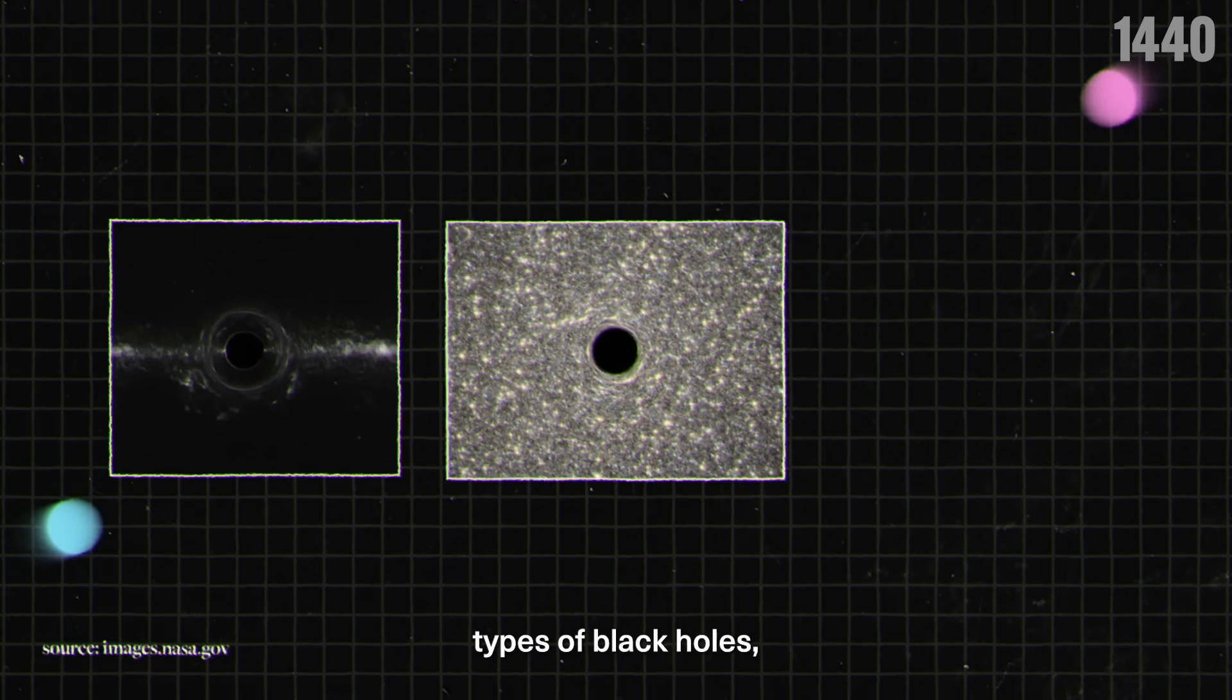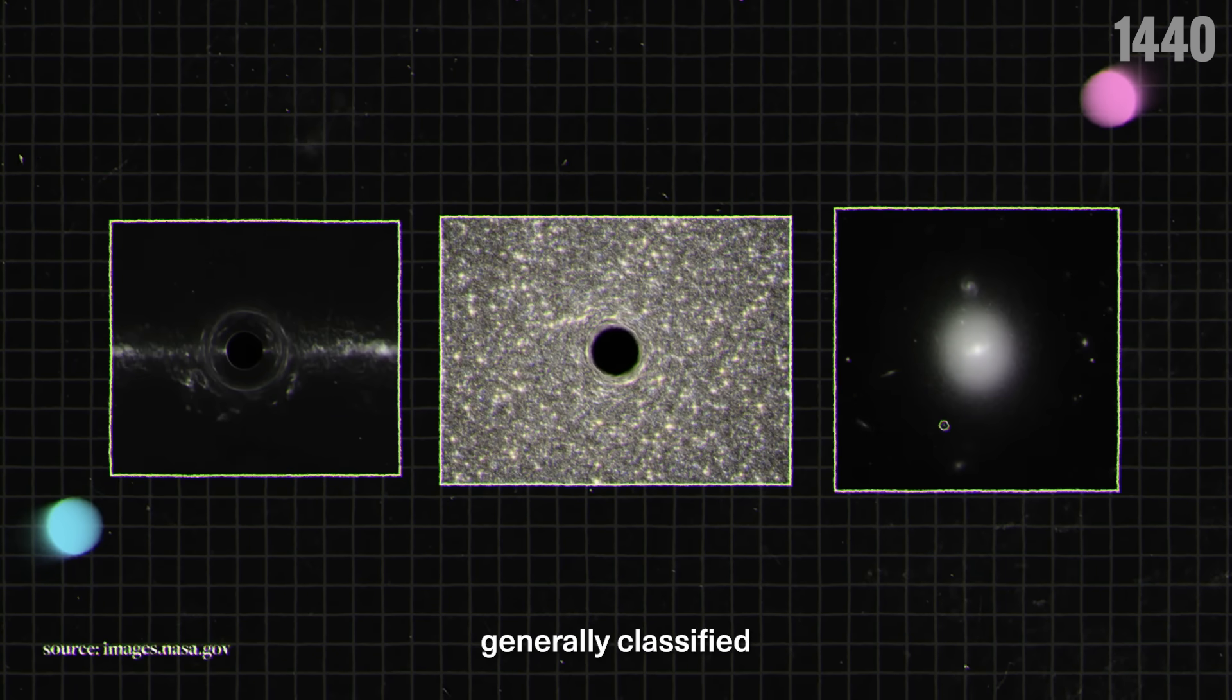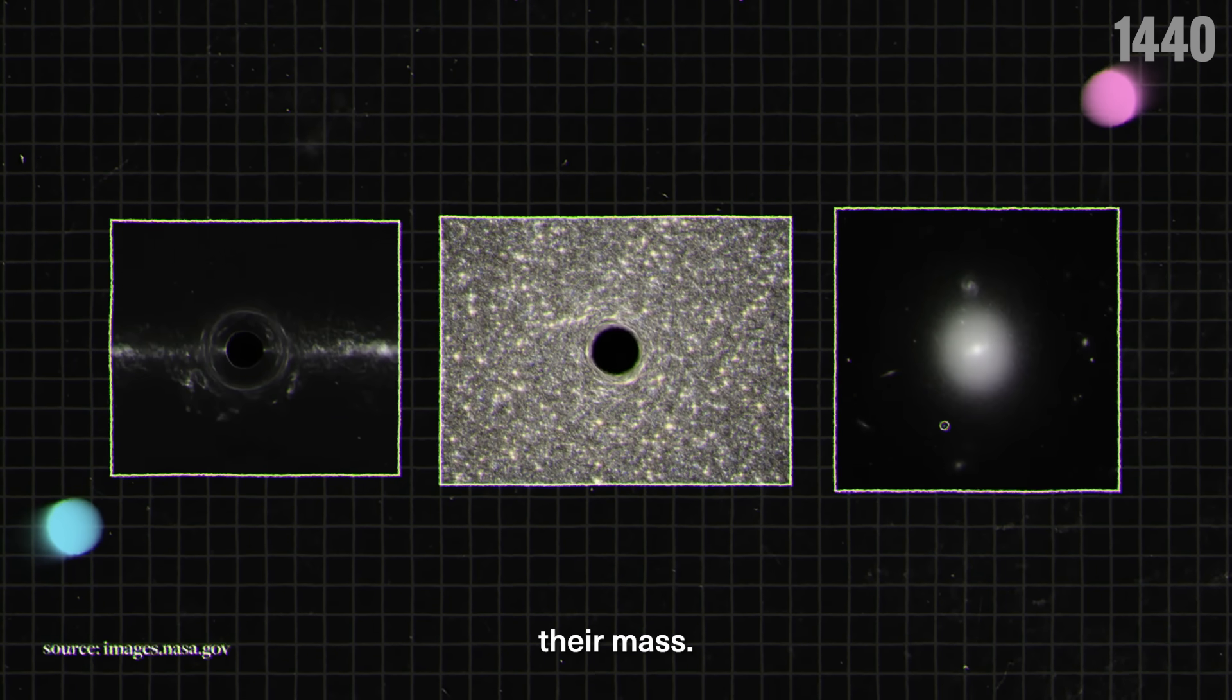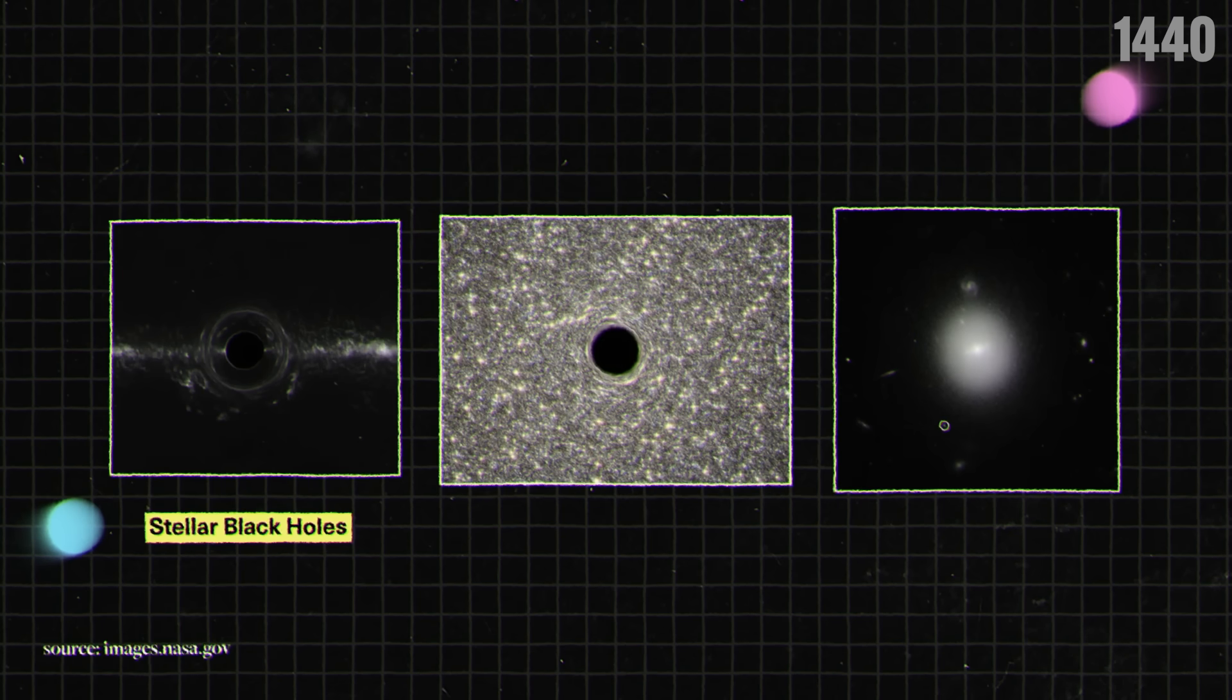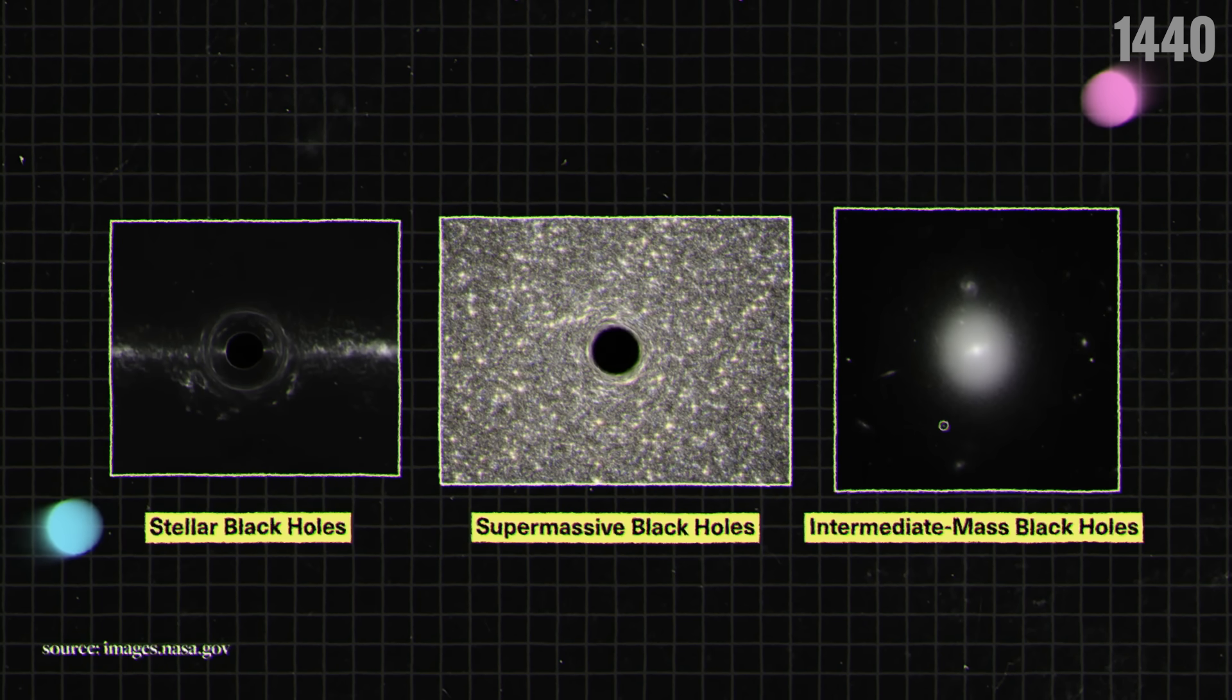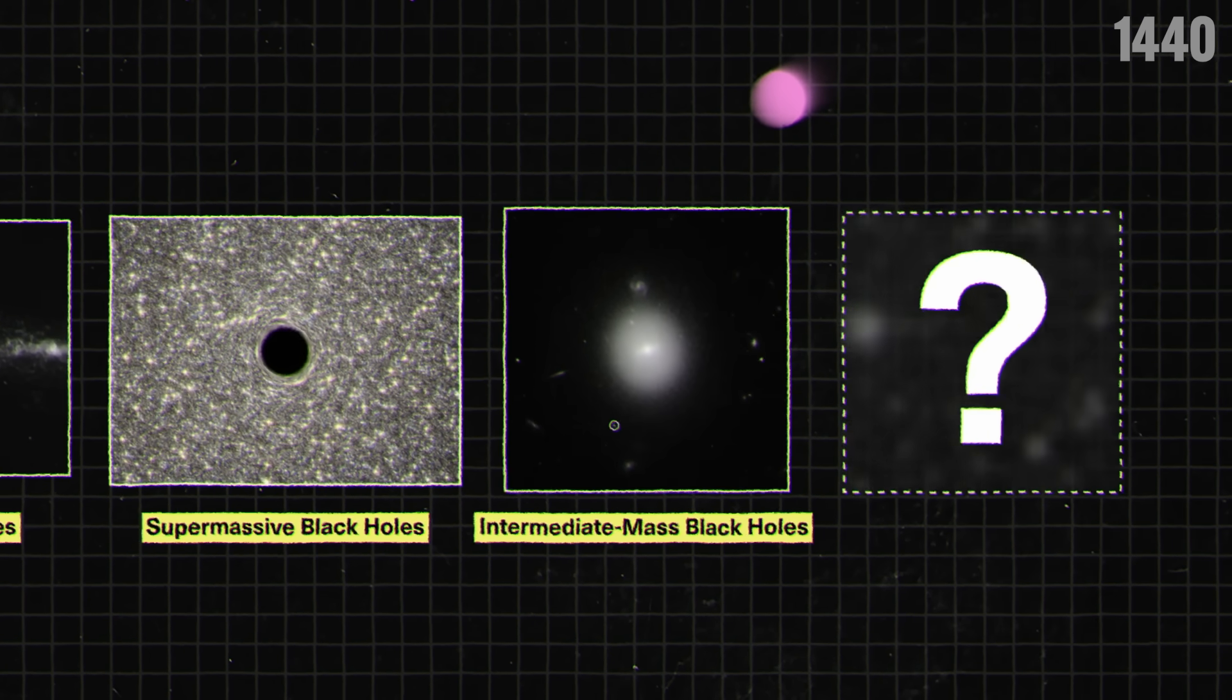Now surprisingly, there are different types of black holes, but are generally classified into three types according to their mass: stellar black holes, supermassive black holes, intermediate mass black holes, and a fourth one as a surprise.